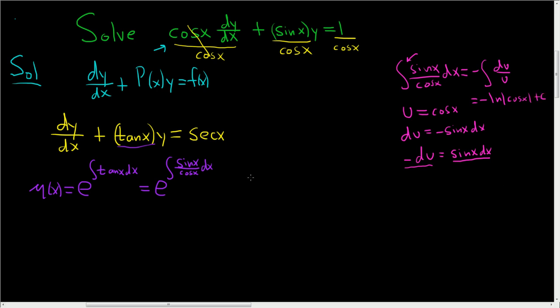So now back to the problem. So this is equal to e to the negative ln absolute value of cosine x. Now we want to write this in a convenient way. At some point we have to multiply the differential equation by our integrating factor, μ(x). So we can bring the negative 1 upstairs. And this is e to the natural log of cosine x to the negative 1.